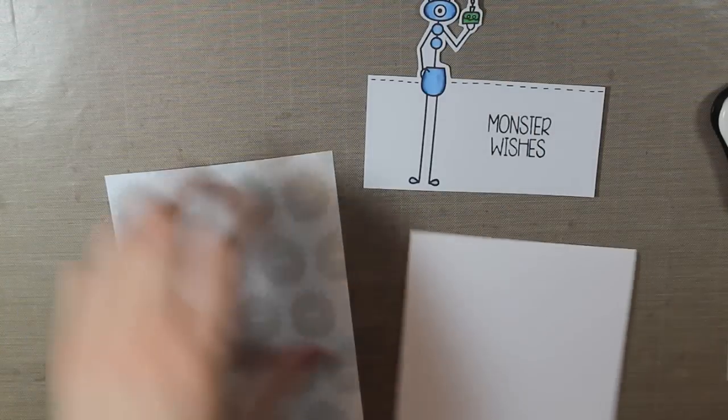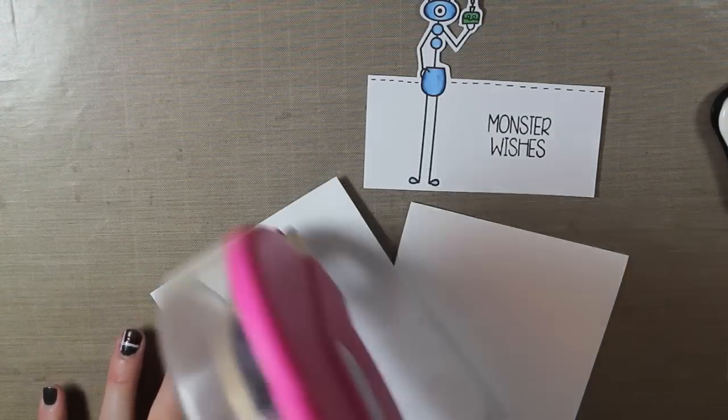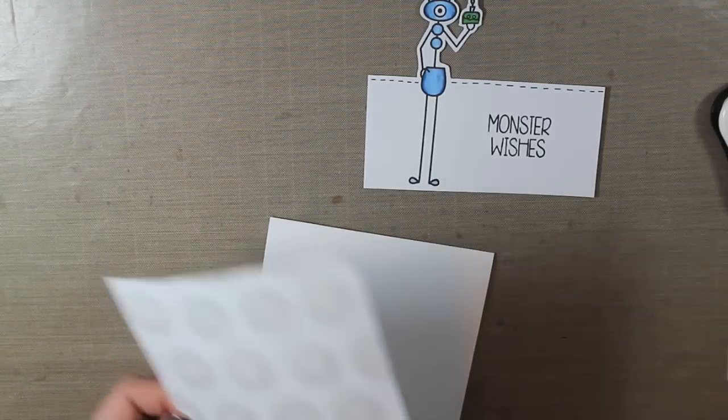And then I'm going to assemble this onto my card. So I have my white A2 size card base. I'm going to place my fuzzy monster background on there.